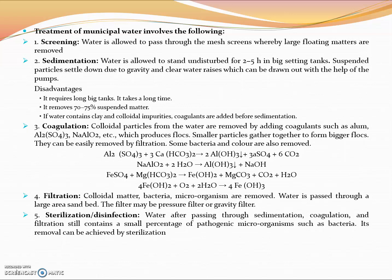The chemistry involved in this process is highlighted here. Step 1: Aluminum sulfate and calcium bicarbonate react to form aluminum hydroxide. Sodium aluminum oxide reacts with water to form aluminum hydroxide and sodium oxide. Ferrous sulfate and magnesium bicarbonate react to form ferrous hydroxide and magnesium carbonate plus CO2. Finally, ferrous hydroxide undergoes oxidation to form ferric trioxide.